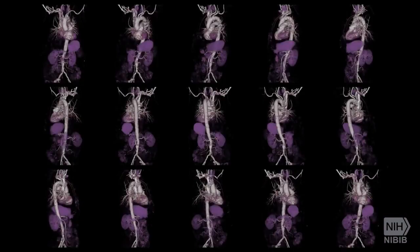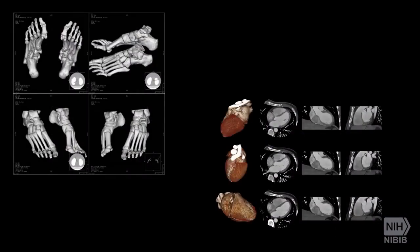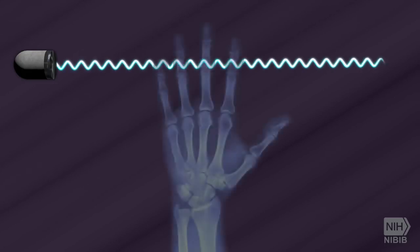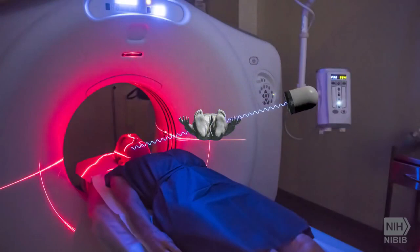A conventional x-ray uses a fixed tube that sends x-rays in only one direction, while a CT scanner uses a motorized x-ray source that shoots narrow beams of x-rays as it rotates around the patient.